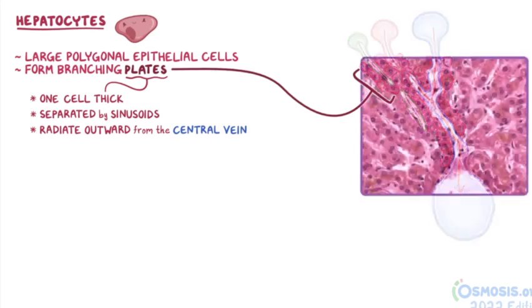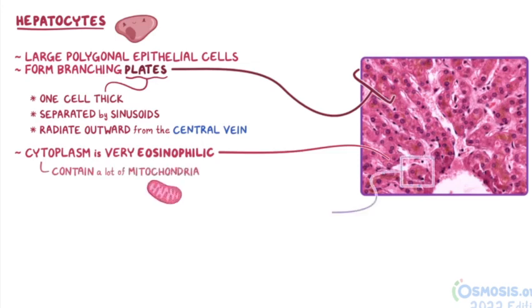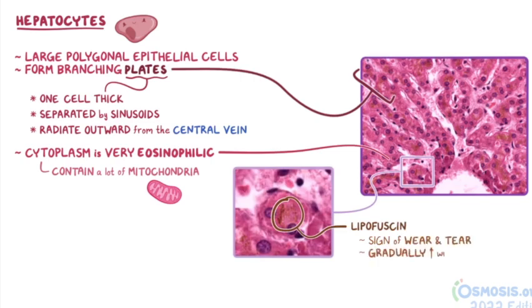The hepatocyte cytoplasm is very eosinophilic, or pink, because they contain a lot of mitochondria. Many of the cells in this image also have fine brown granules within the hepatocytes, called lipofuscin. These granules are considered a sign of wear and tear, and it's normal to see the amount of lipofuscin gradually increase with age.